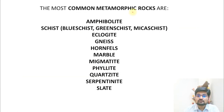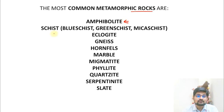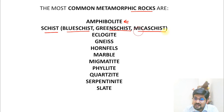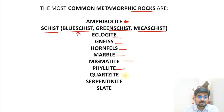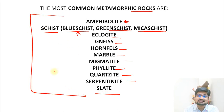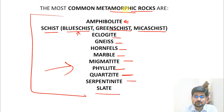Common metamorphic rocks include amphibolite, schist (blue schist, green schist, mica schist — depending on mineral composition), eclogite, gneissic rock, hornfels, marble, migmatite, phyllite, quartzite, serpentinite, and slate. All these are important examples under metamorphic rocks.